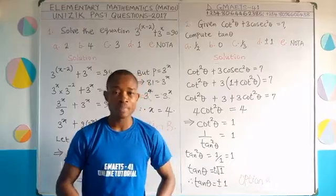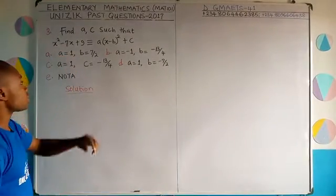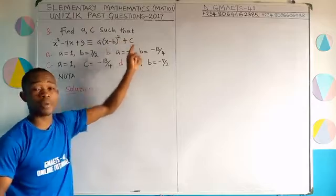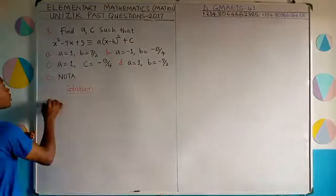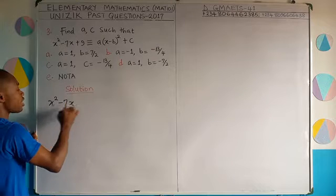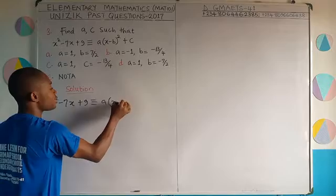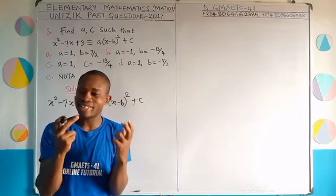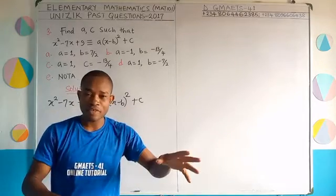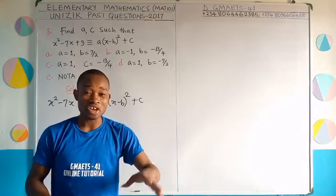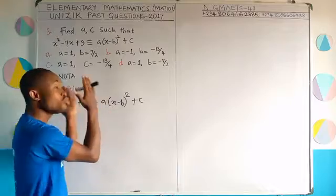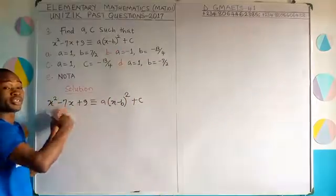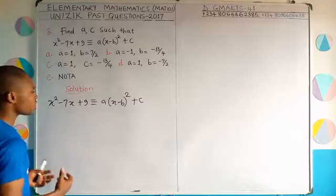Question 3: find A and C such that x squared minus 7x plus 9 is equivalent to A open bracket x minus B close bracket squared plus C. This problem uses knowledge of partial fractions and comparing coefficients. We need to expand the right-hand side and then compare both sides, equating coefficients and constant terms.